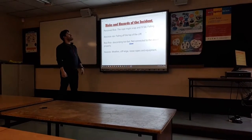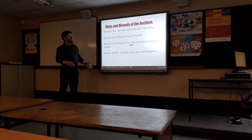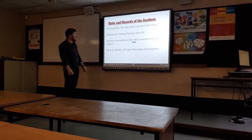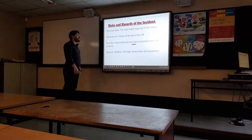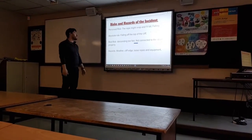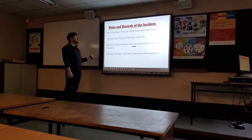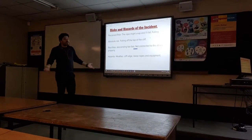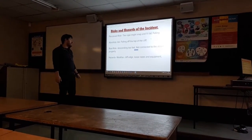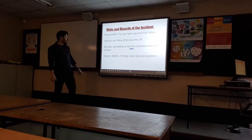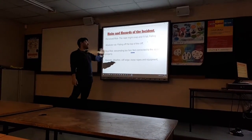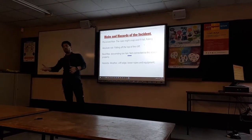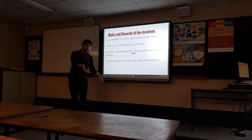Risk and hazards of the instance. Perceived risk: the rope might snap off while falling — that's just a perceived risk, some people might think that. Absolute risk: falling off the top of the cliff. Real risk: descending too fast, or not connected to the abseil properly — that's a risk that could happen at any stage. Hazards include weather, cliff edge, loose ropes, and equipment. Loose ropes is a big one — how they're tied at the cliff edge and someone could trip over.